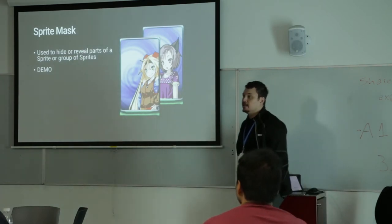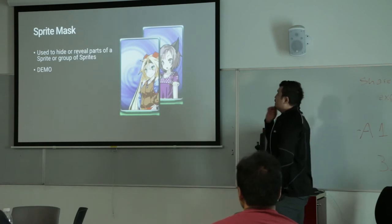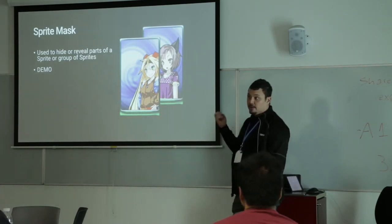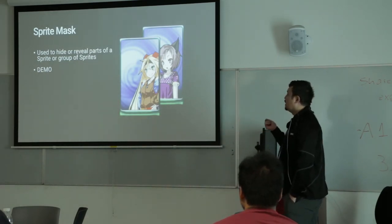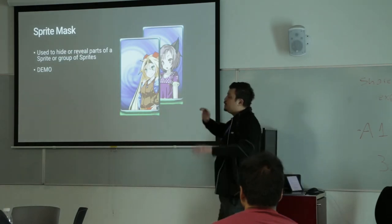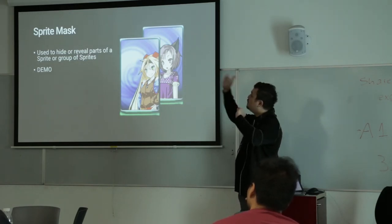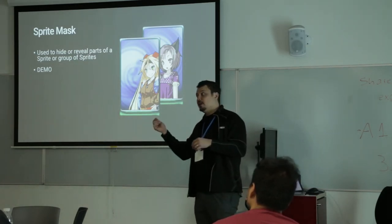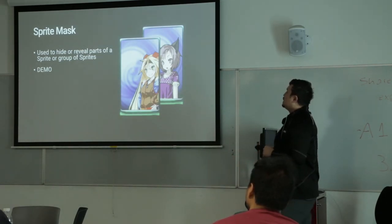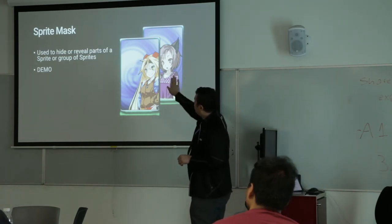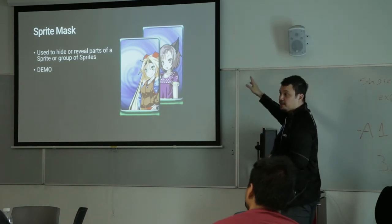Next up is masking. This is a really common thing in games that's been requested for a long time, and we're really happy it's out — sprite masking. The general concept is you define a sprite as a mask to reveal or hide parts of another sprite or groups of sprites. For example, a green frame can be masking sprites inside it as well as the background, and two masks can overlap on top of each other.